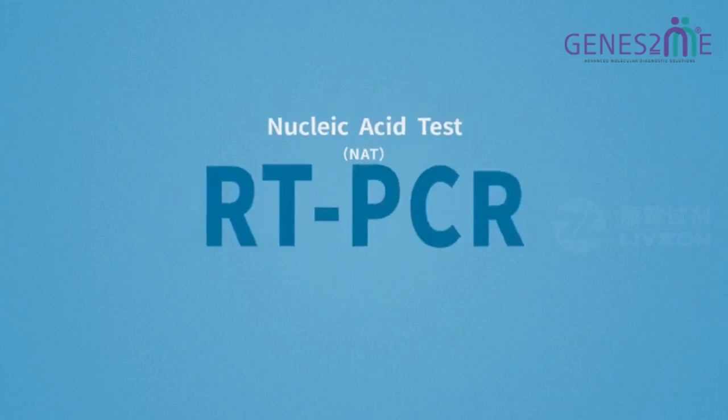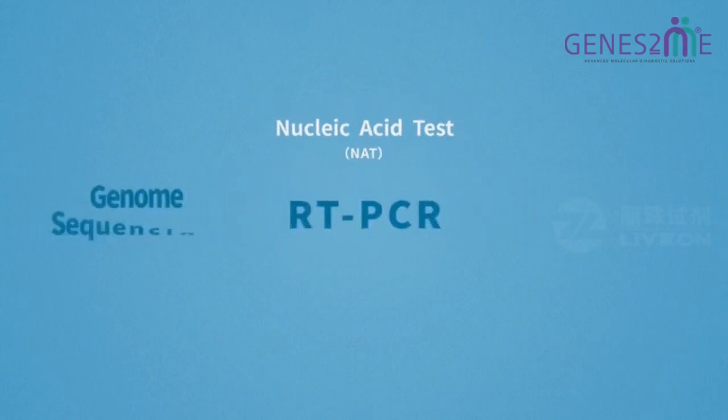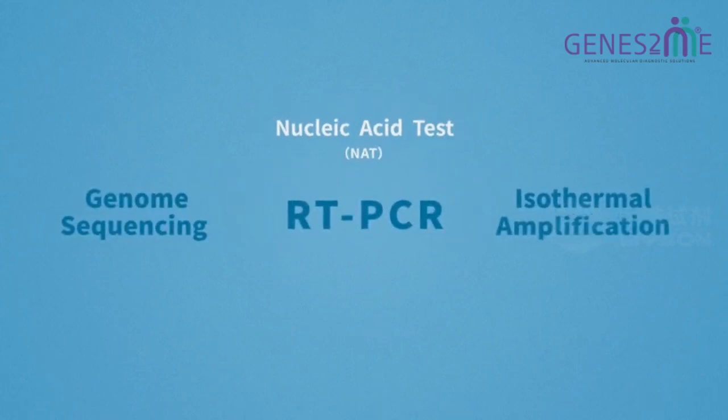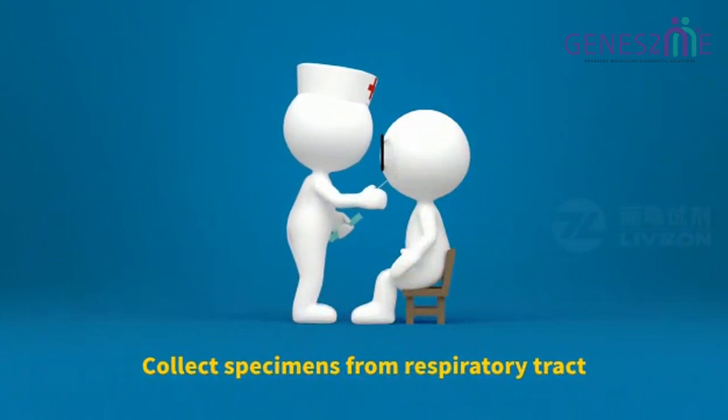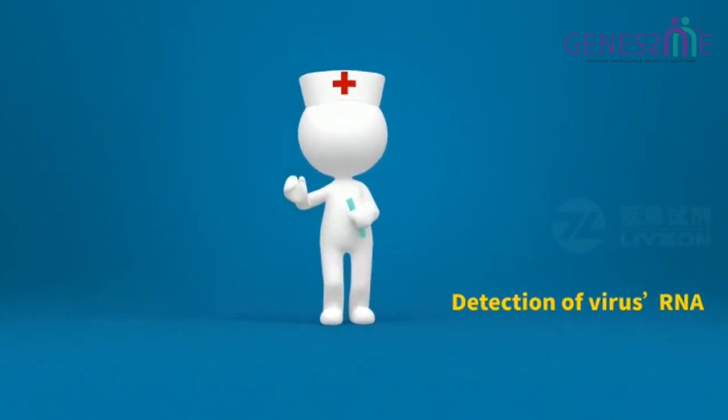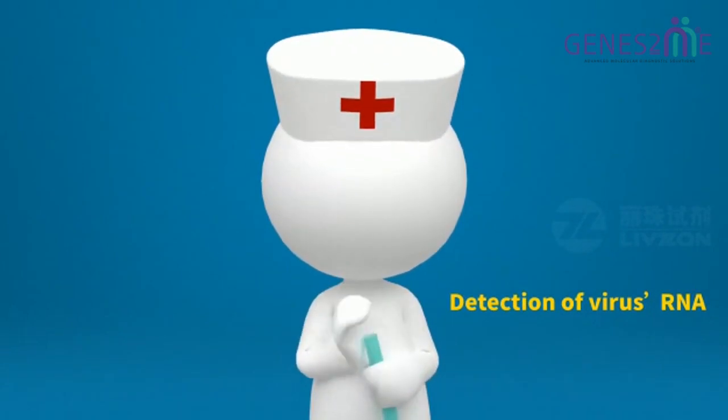NAT methods include RT-PCR, genome sequencing, and isothermal amplification, among which RT-PCR is most widely used. Specimens from respiratory tract are collected for detection of virus RNA so as to confirm whether one is infected with coronavirus.